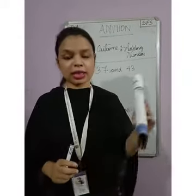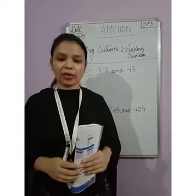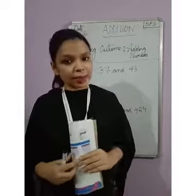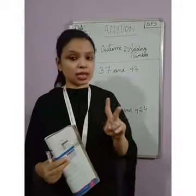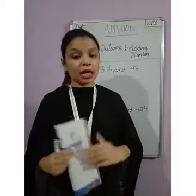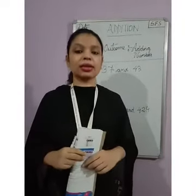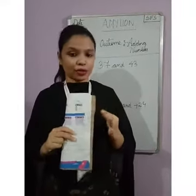Now, before starting the questions, let us recall what topics we have learned in the chapter on addition. In this chapter, we have learned to add 2-digit and 3-digit numbers. In a 2-digit number, the place values are 1s and 10s. And in a 3-digit number, the place values are 1s, 10s, and 100s.